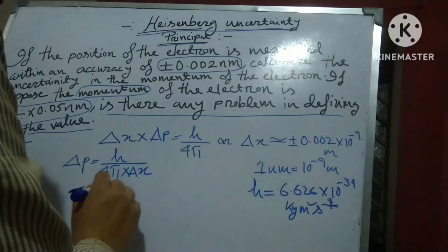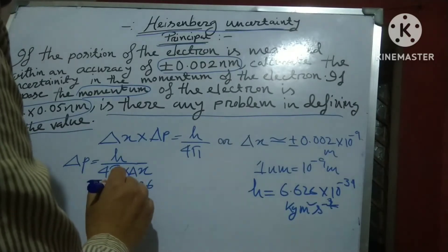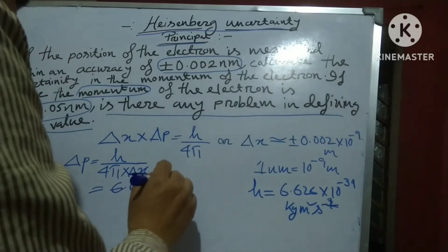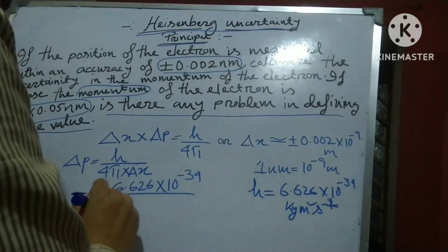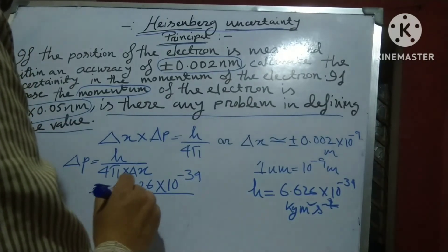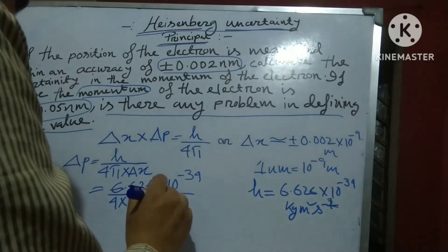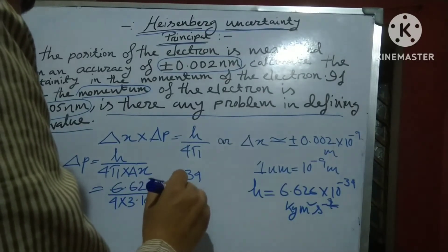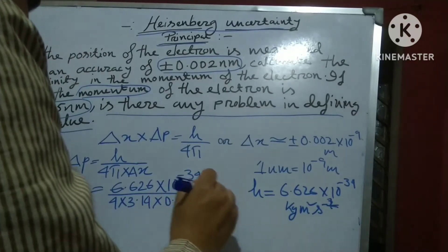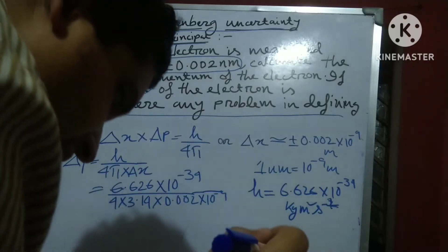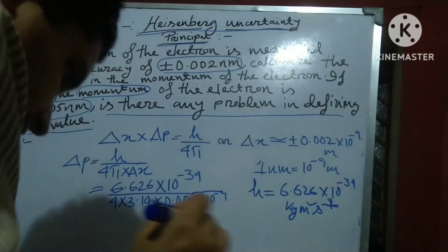I apply this formula. So we get 6.626 into 10 to the power minus 34 divided by 4 into 3.14 into Δx equal to 0.02 into 10 to the power minus 9, 10 to the power minus 9 meter.